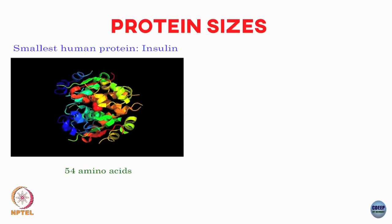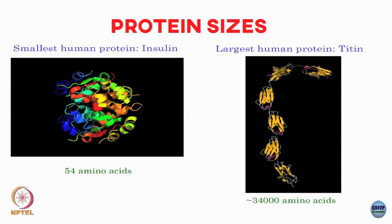Digressing from E. coli for one slide: this is the smallest human protein, insulin, which regulates your blood sugar. Insulin contains 54 amino acids. The largest human protein is found inside muscle — it is called titin — and has 34,000 amino acids. That is the range we are talking about: 54 on one side for insulin and 34,000 for titin.